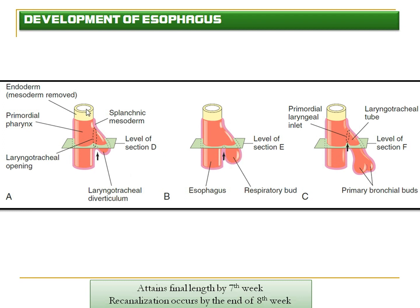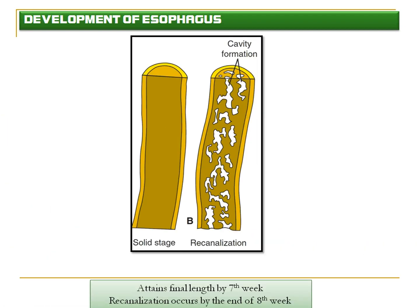The tracheoesophageal septum separates the respiratory diverticulum from the esophagus, but cranially the laryngotracheal tube remains in communication with the primordial pharynx. So the future trachea and esophagus are cranially in communication but inferiorly separated by the tracheoesophageal septum, forming the future tracheobronchial tube. The mesoderm surrounds the endoderm-lined tube throughout this process.